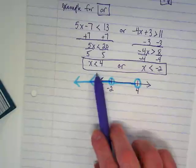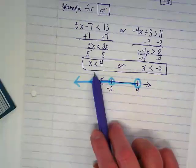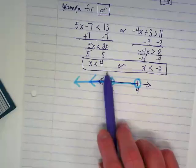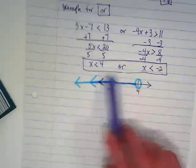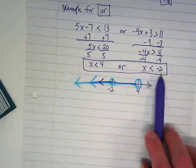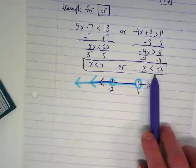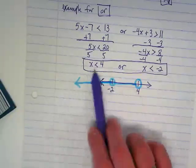For this inequality, does negative 2 work? Is negative 2 less than 4? Yes. And in this one, x is less than negative 2. So for this inequality, the negative 2 doesn't count. But for this one, it does.